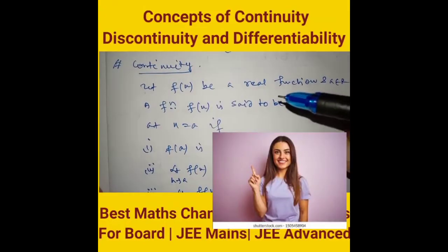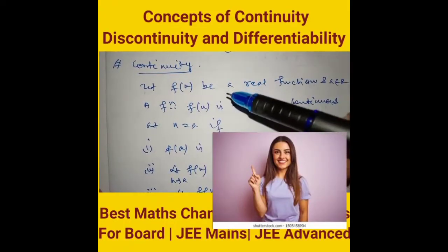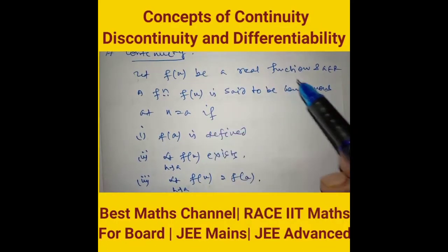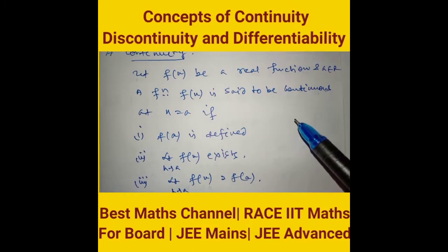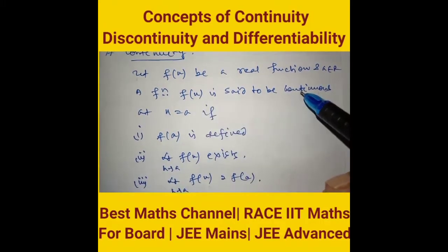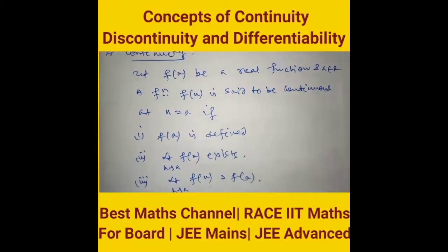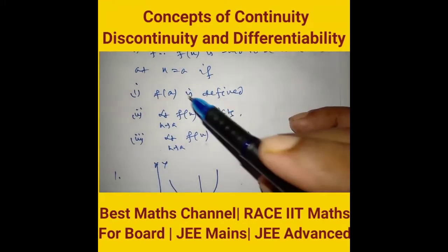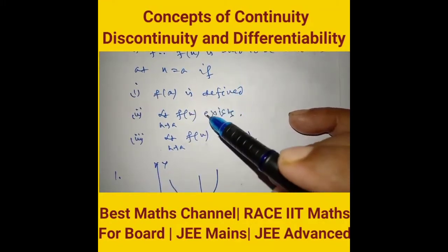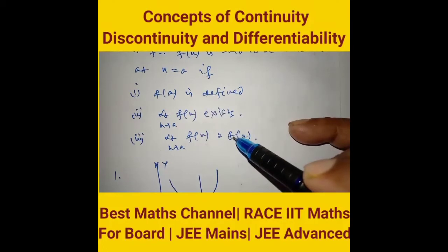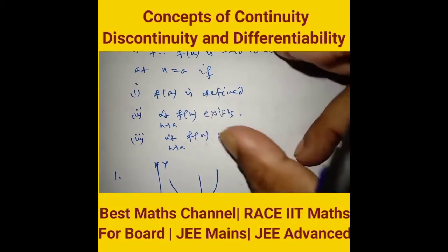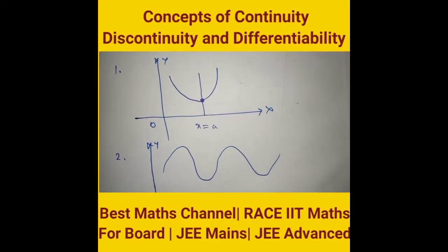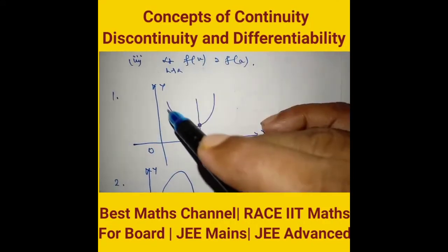Basic concepts about continuity: first, consider f(x) to be a real function and 'a' a real number. The function f(x) is said to be continuous at x = a if three conditions are satisfied: f(a) is defined, the limit exists, and the limiting value equals the defined value. This is the analytical approach.